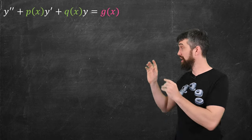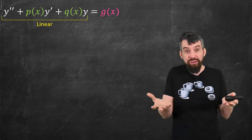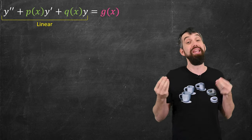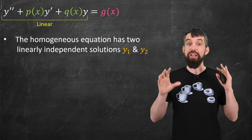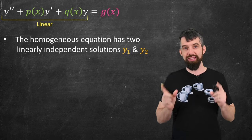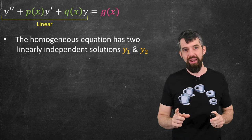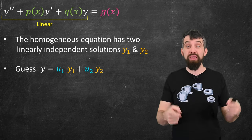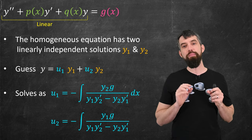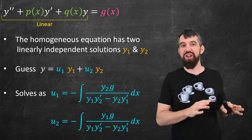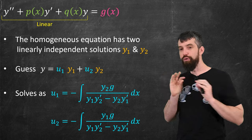How does this apply more broadly? The category of differential equations this works for are linear differential equations: y'' + p(x)·y' + q(x)·y = g(x), where the coefficient functions only depend on x, with a non-homogeneity g(x) on the right. The methodology is exactly what we've done. The homogeneous theory gives us two linearly independent solutions y1 and y2. We then make the same guess — vary the parameters with u1·y1 + u2·y2 — plug it all in, and run through the same algebra. Working generically with y1 and y2 instead of sine and cosine, you get explicit formulas for u1' and u2'.